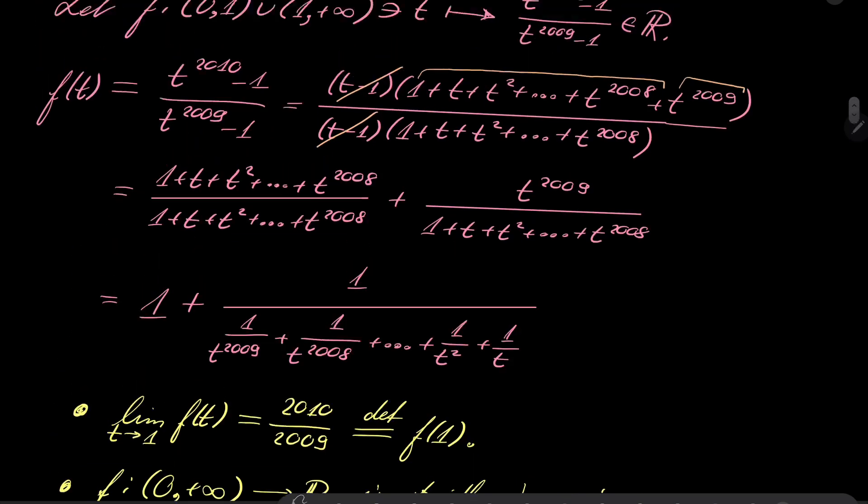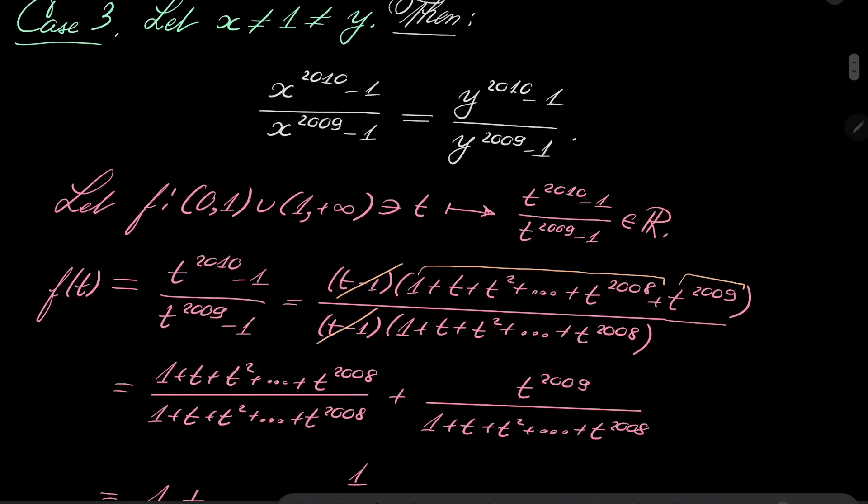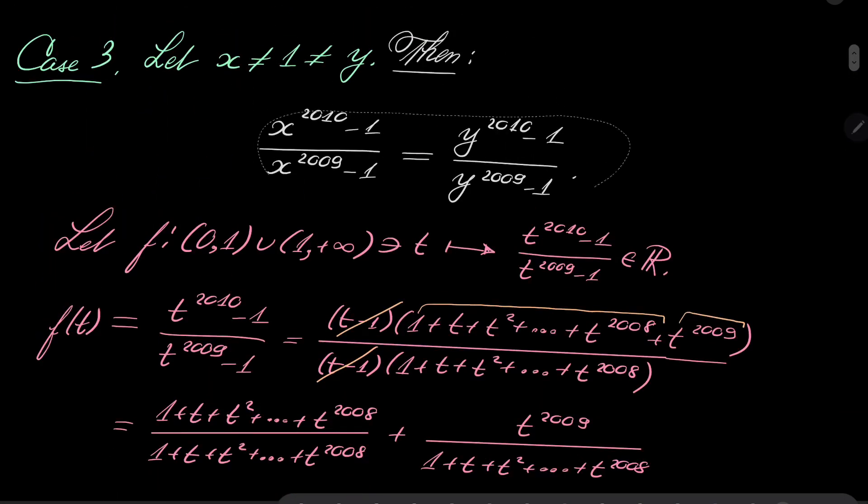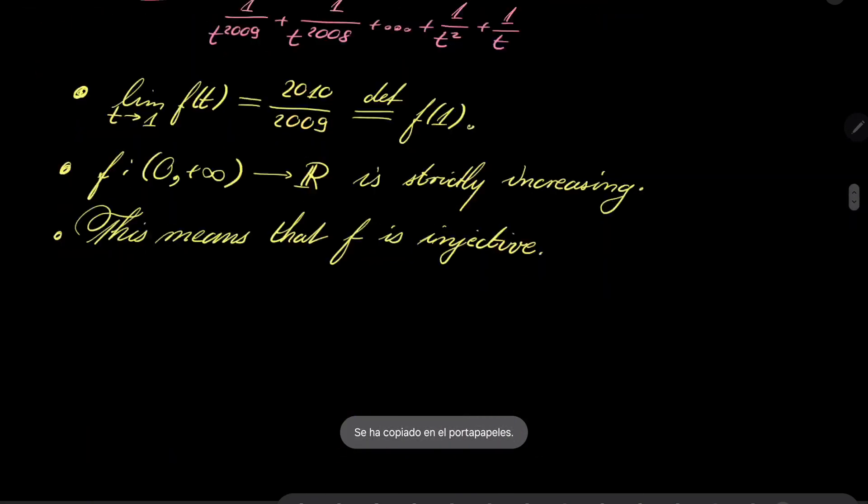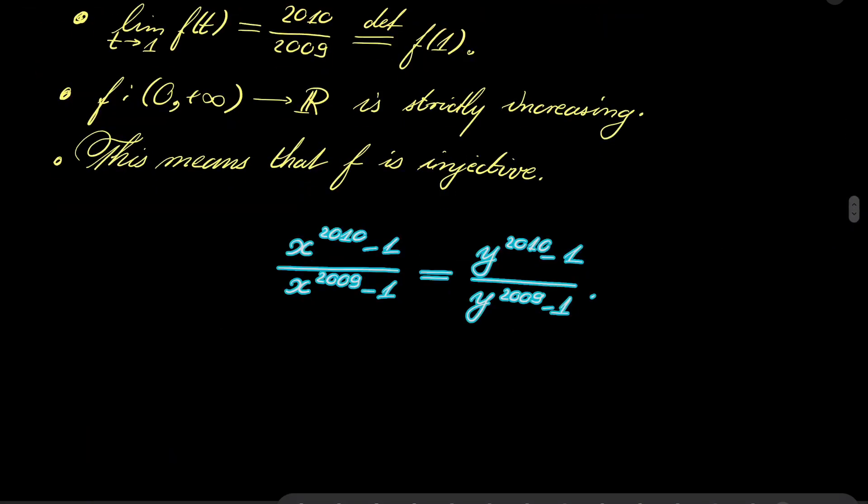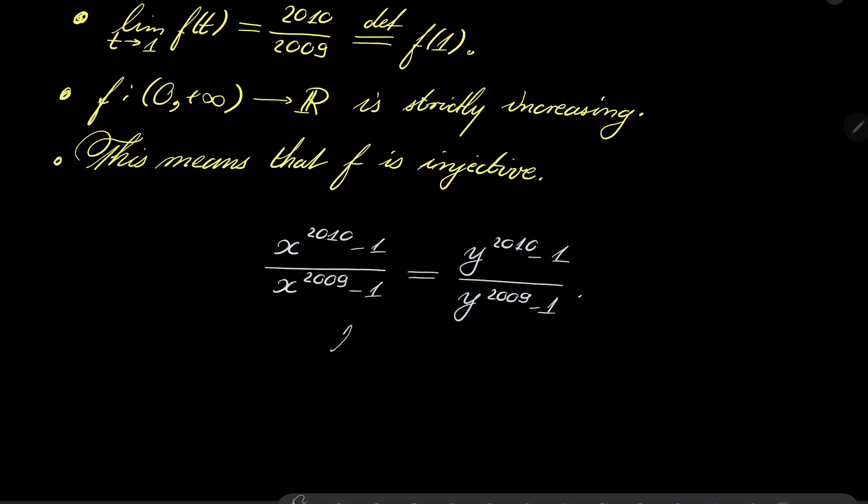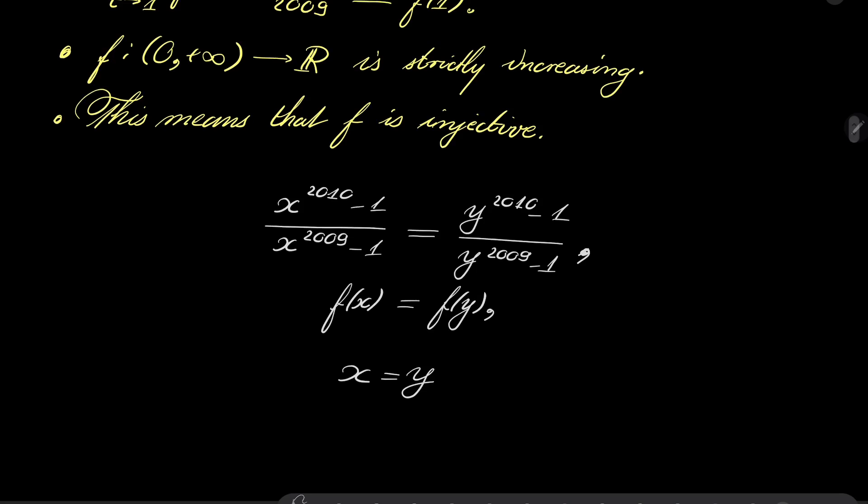Let's go back to this equation which we have derived. Notice that this equation says that f(x) should equal f(y). But by injectivity, this means that x equals y. And of course, in this case, our equation is satisfied.